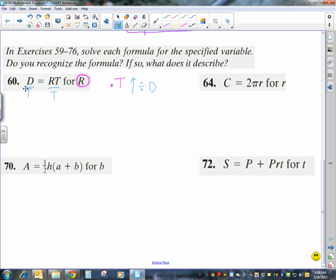And sometimes, when they're this easy, you don't need to go through this process. But if you're in the habit of doing it, then it gets easy when you have one that's more complicated. So, D over T equals R. I have now solved this. Do you recognize the formula? This is our distance formula, because distance equals rate times time.